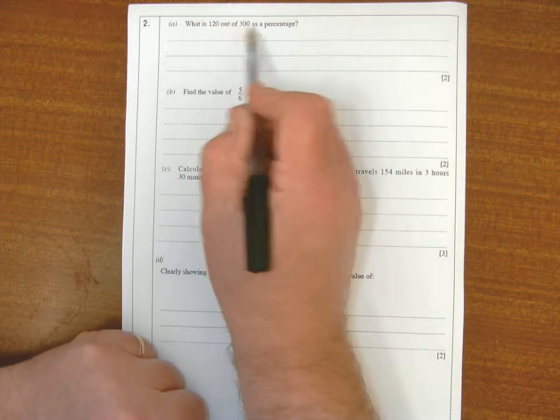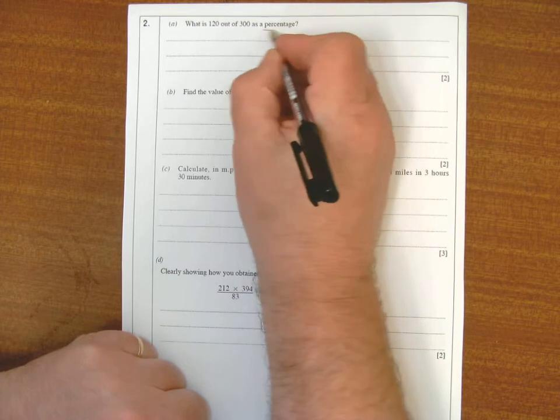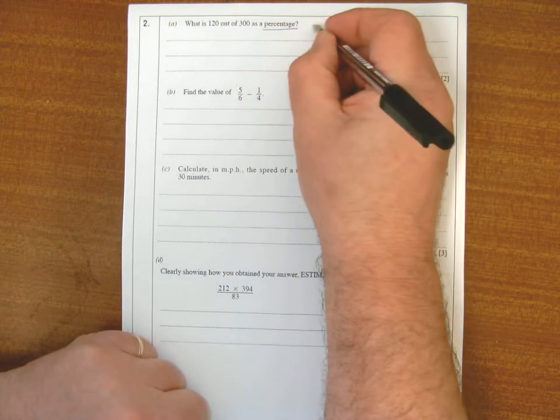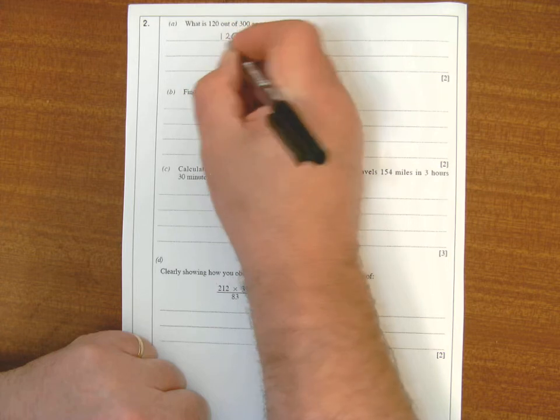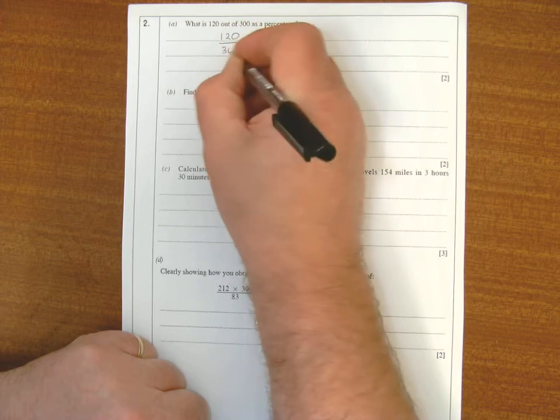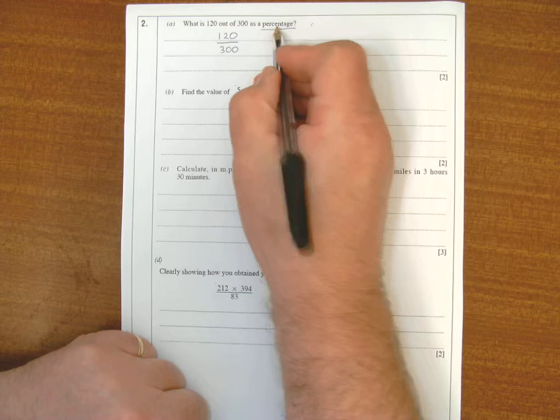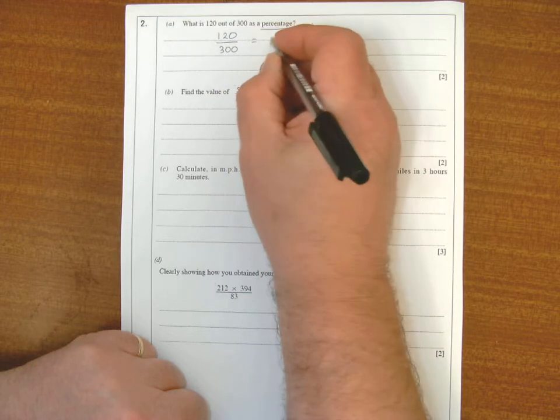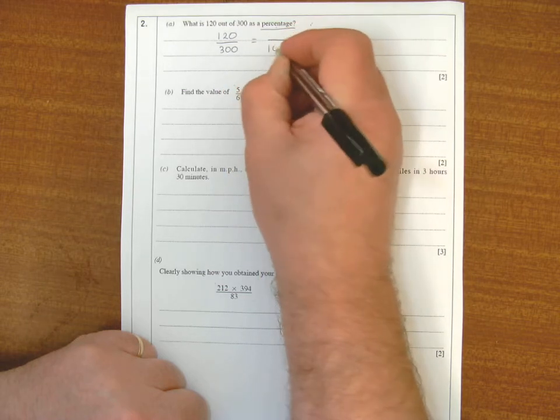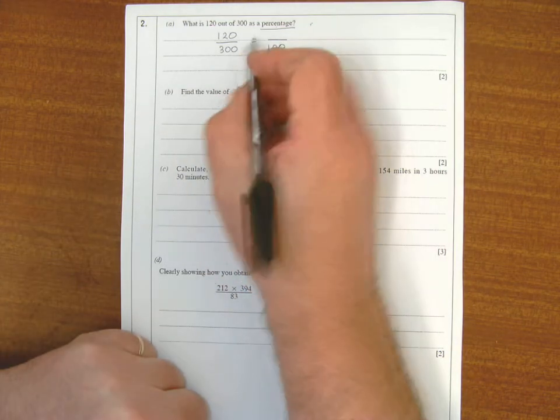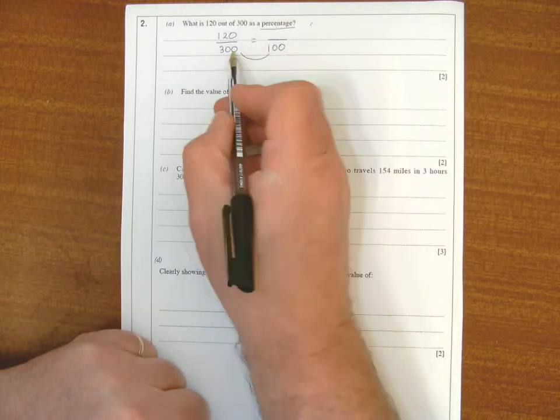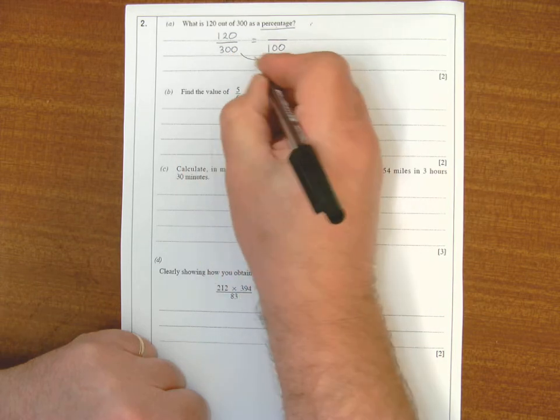120 out of 300 as a percentage. As a percentage means out of 100, so at the moment I got 120 out of 300. To change this to a percentage it has to be a value out of 100. So I look at the bottom numbers - what have I done to 300 to make 100?